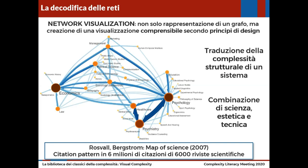Quindi tutto questo che significa? Non solo riconosciamo la complessità che può essere espressa attraverso le reti, ma cerchiamo anche di decodificarla. Quindi la visualizzazione di reti non è solo la rappresentazione di un grafo, cioè di nodi e connessioni tra questi nodi, ma si cerca di creare una visualizzazione che sia comprensibile secondo principi di design: una combinazione tra scienza, estetica e tecnica. In questo caso la rete rappresentata è quella di citazioni tra paper appartenenti a discipline diverse — economiche, sociologia, psicologia, psichiatria — su oltre settemila riviste scientifiche.